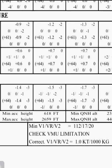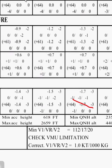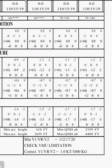Coming to the bottom right of this chart, you have the minimum V1 and VR speeds required for this runway, a check for VMU limitation which we will do in the calculations, and V1, VR, V2 correction of 1 knot per 1000 kg. This relates to your CG — these charts are designed for 25% forward CG, but if the CG is 27% forward, including the safety margin, this correction must be applied.